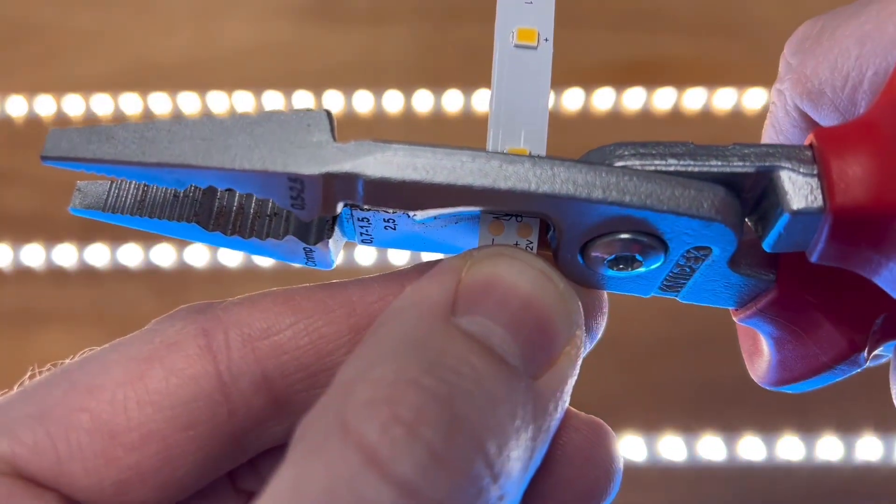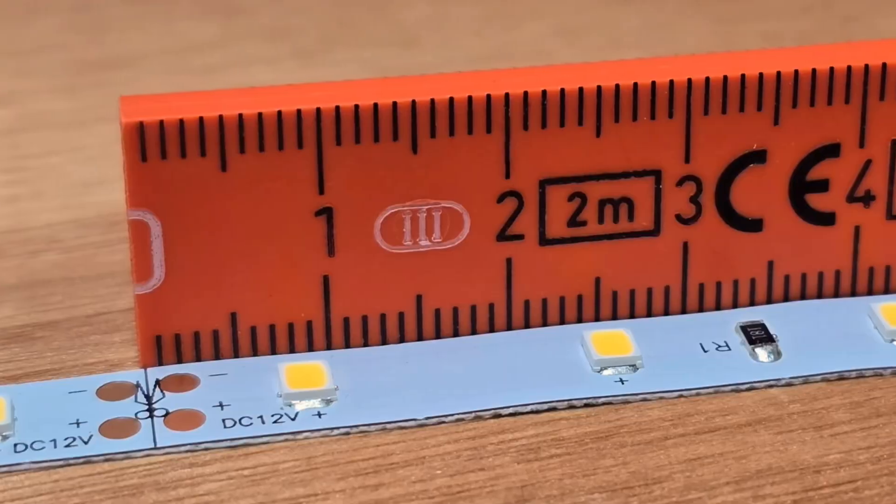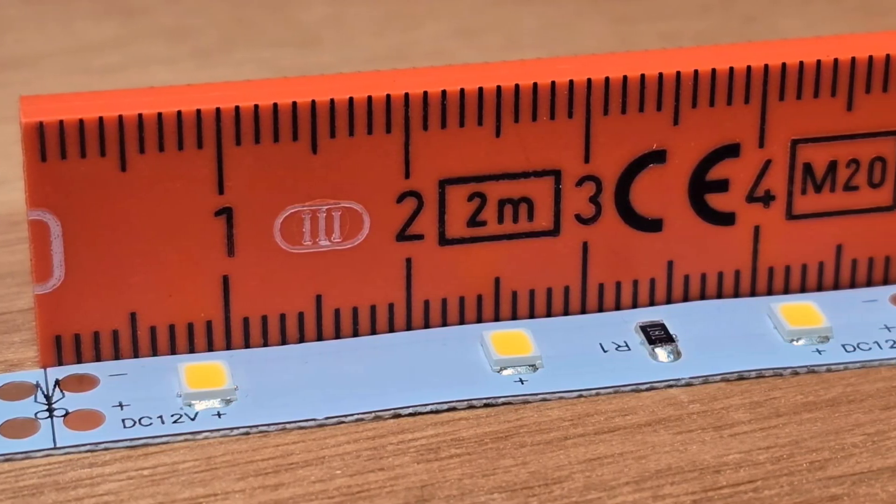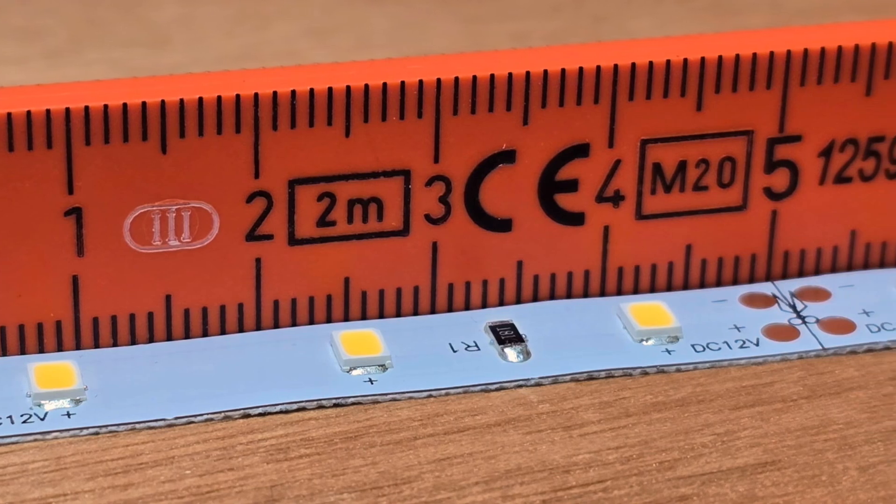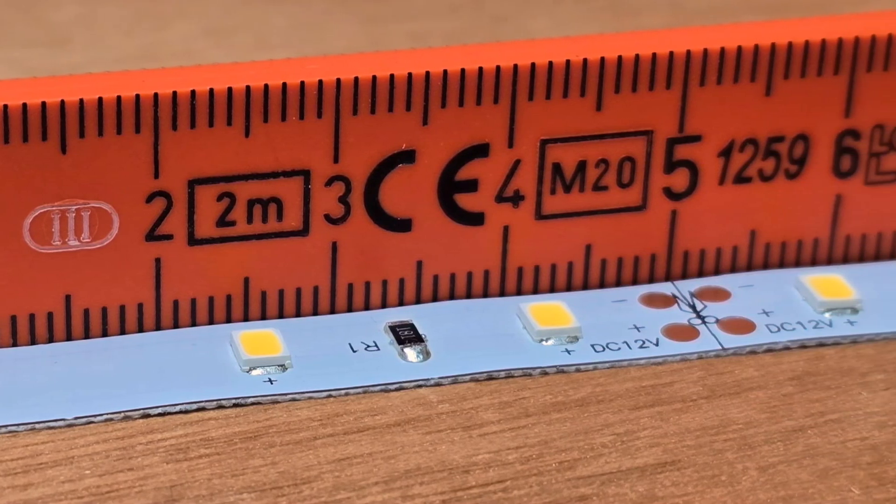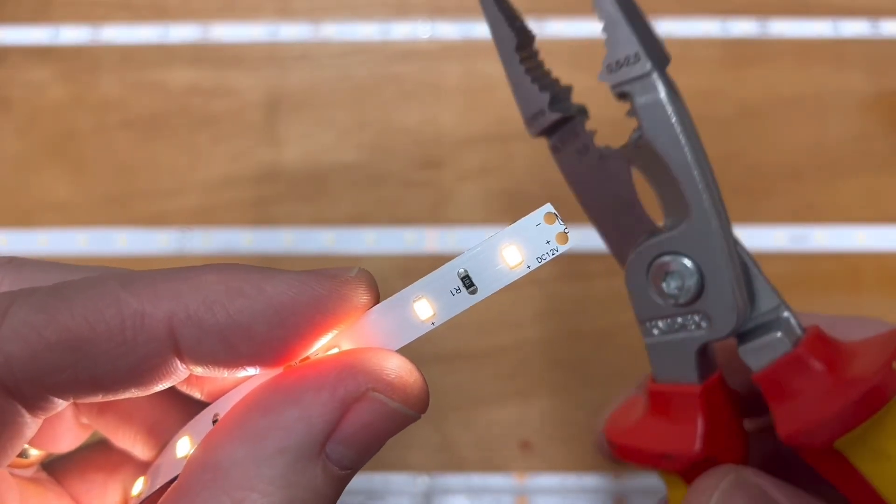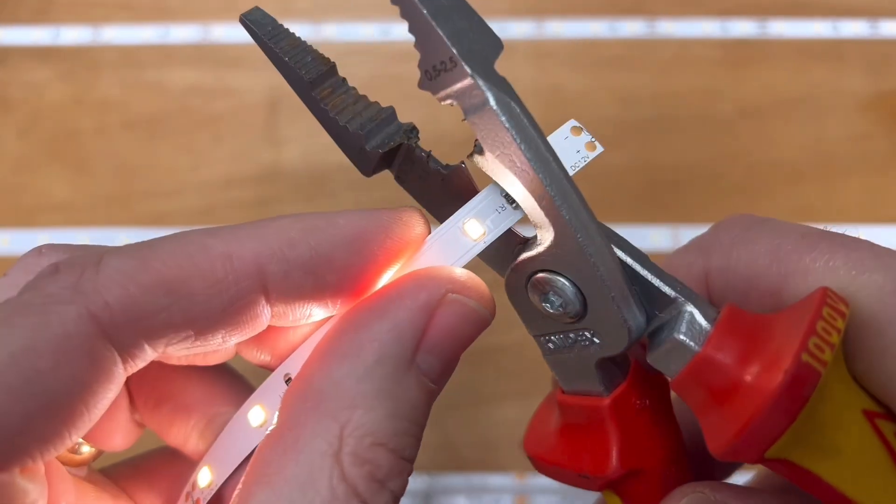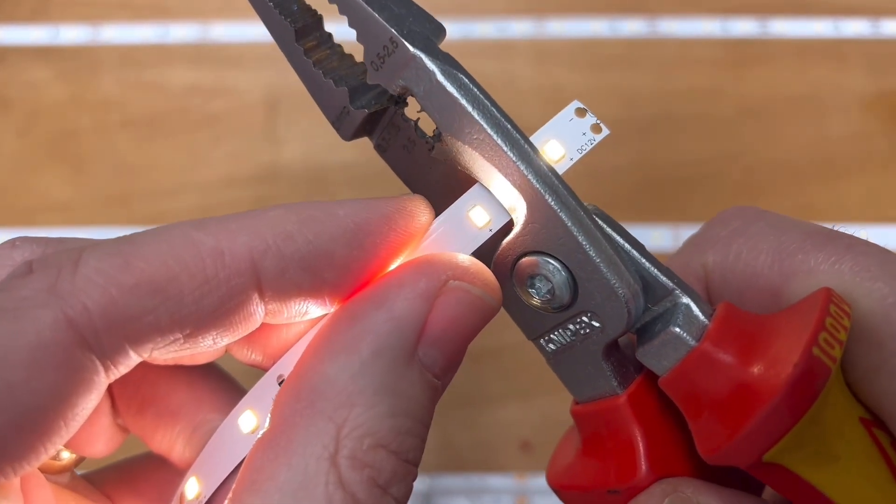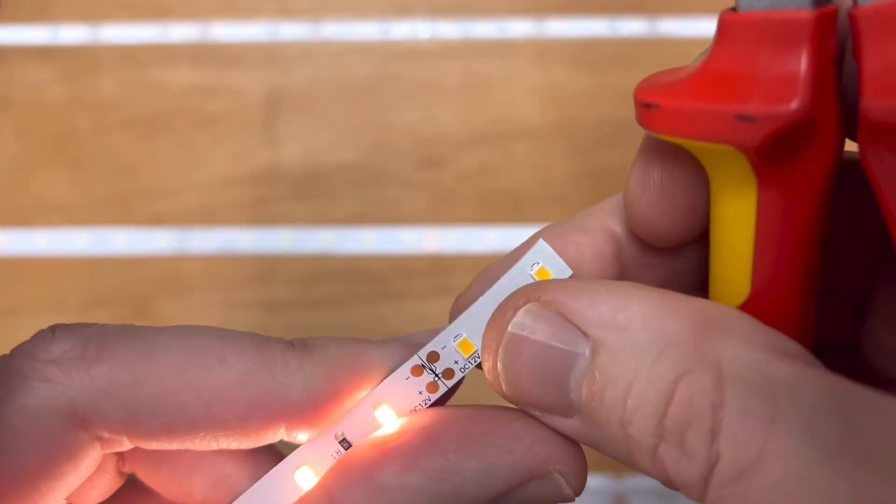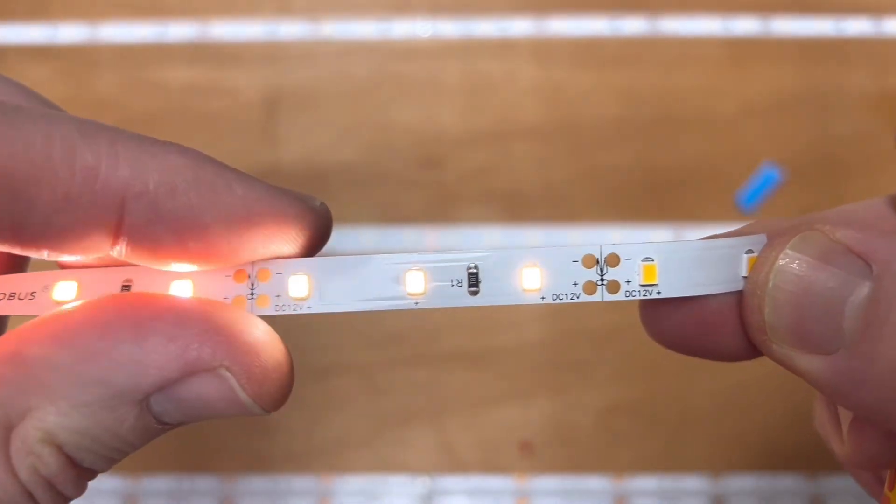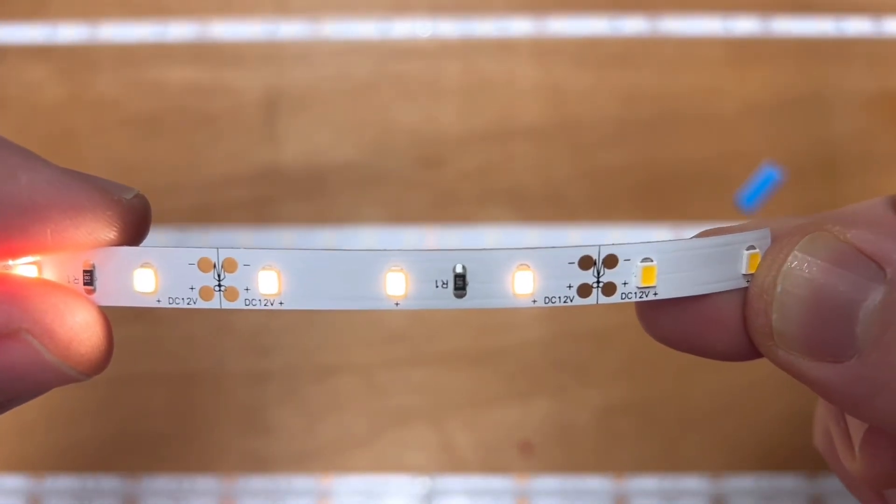These regular points are set at different lengths for different brands and products. On this Vega strip they're every 50 millimeters. If you need to cut it a distance that falls between the 50 millimeter cut points, then the solution is don't. It won't work and at the very least you'll destroy that section of the strip if not the whole length. For guidance on how to work within these distances, see a future video in this series.